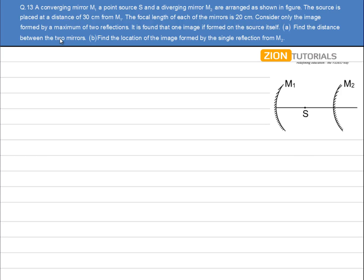A converging mirror M1, a point source S, and a diverging mirror M2 are arranged as shown in the figure. The source is placed at a distance of 30 cm from M1. The focal length of each of the mirrors is 20 cm. Consider only the image formed by a maximum of two reflections. It is found that one image is formed on the source itself. Find the distance between the two mirrors.